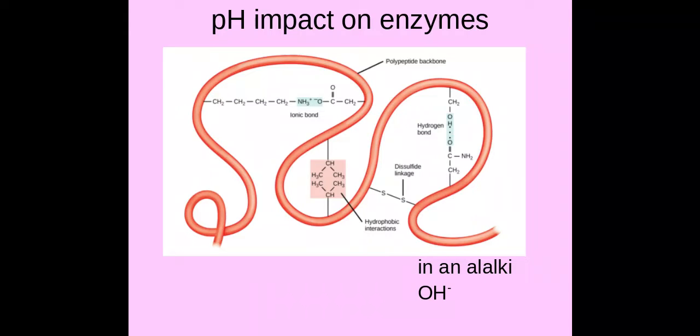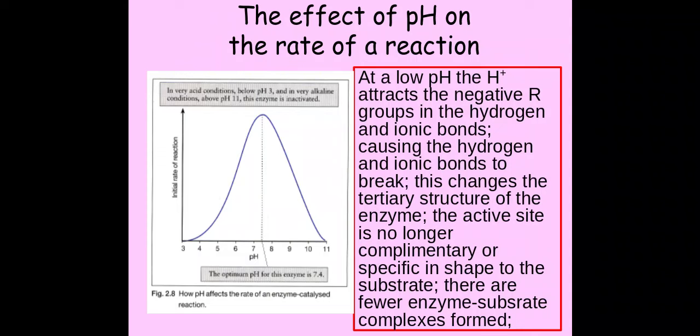In an alkali again it's very similar in that it will impact upon the ionic and the hydrogen bonds, but in this case it will attract the positive parts of those bonds but it will still break them. So this means that when I have a very low pH and the H+ ions will attract those negative R groups that we've just discussed there.